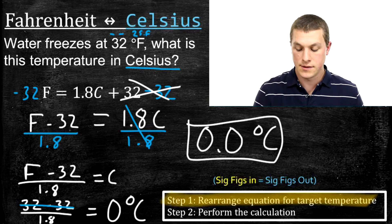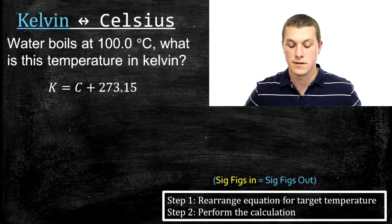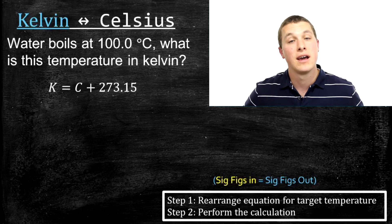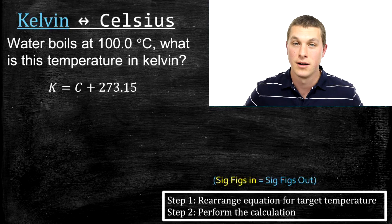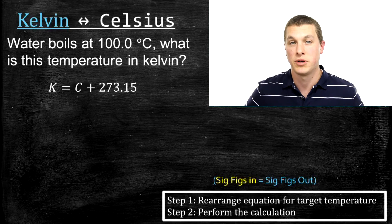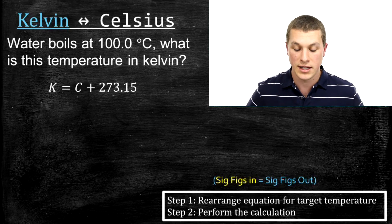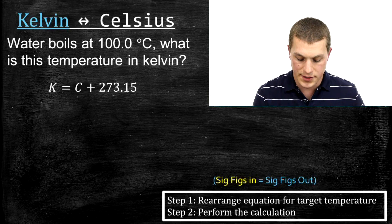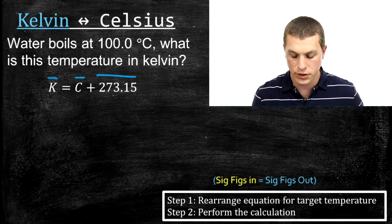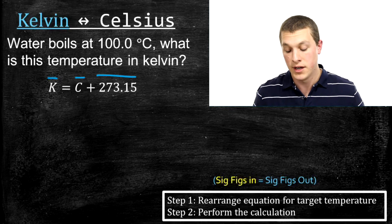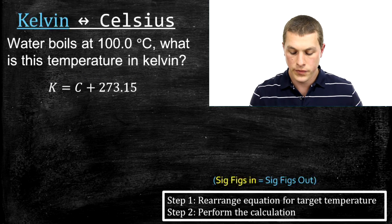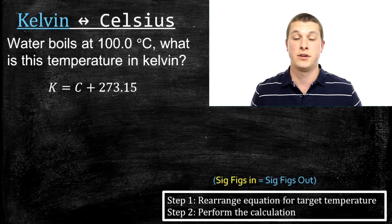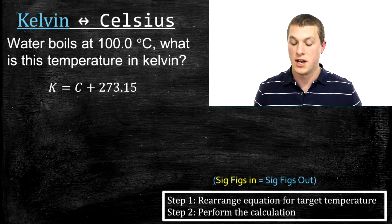Now we'll talk about going between Kelvin and Celsius. This is actually the more important and also the easier conversion. Many equations in chemistry require temperature in Kelvin, so you'll use this often. The equation is: K equals C plus 273.15, meaning temperature in Kelvin equals temperature in Celsius plus 273.15. We'll follow the same two steps: rearrange for the target temperature, then perform the calculation.